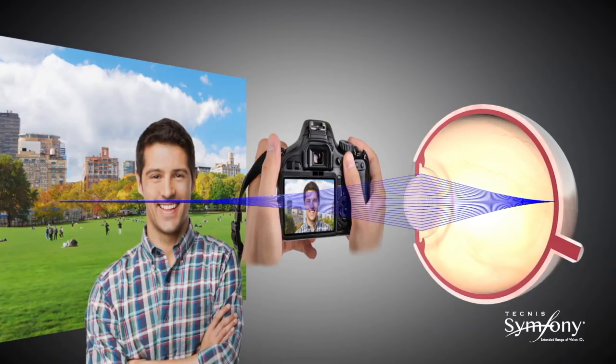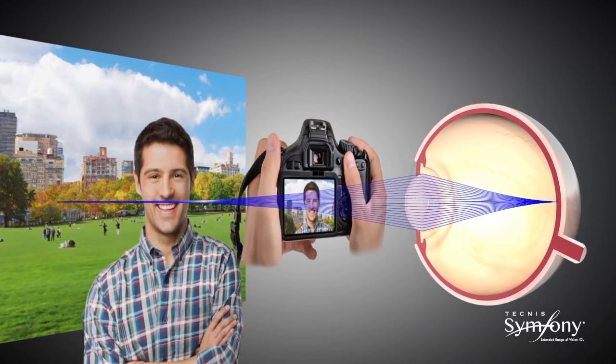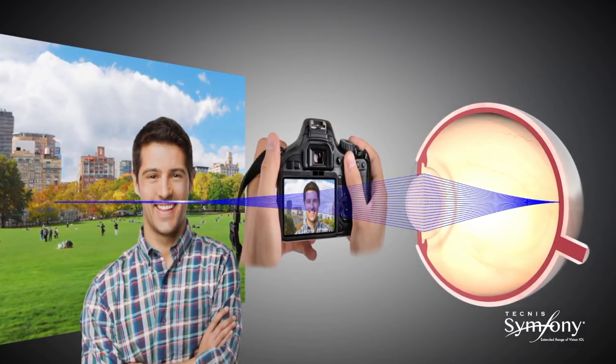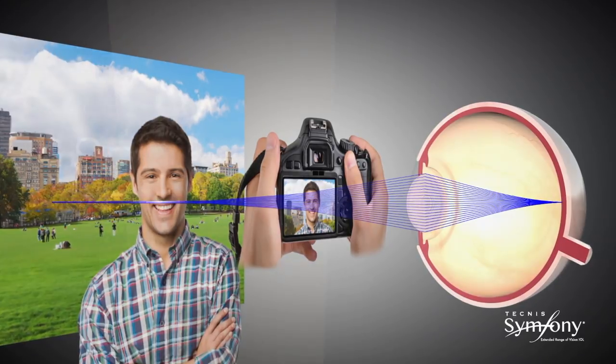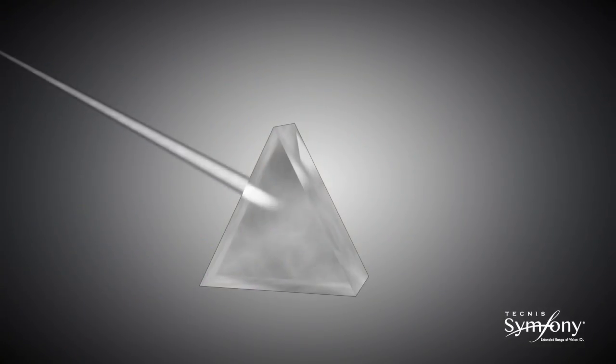The Symphony lens, on the other hand, creates a continuous depth of focus from distance all the way to arm's length and does not suffer from the same glare and halos at night.